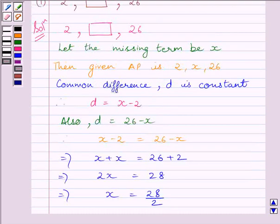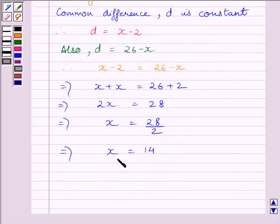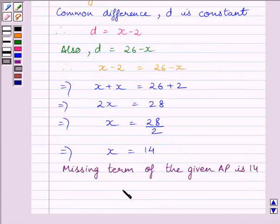We assume that the missing term is X. And, we know X is equal to 14. So, the missing term of the AP is 14. So, final answer is 14. This completes the session. Hope you understood the session. Take care and goodbye.